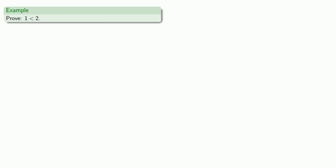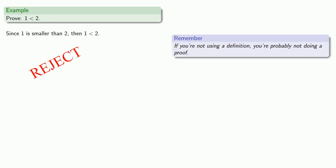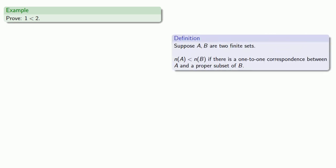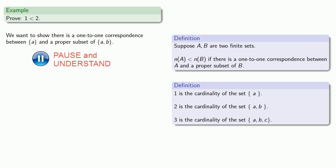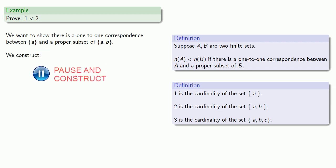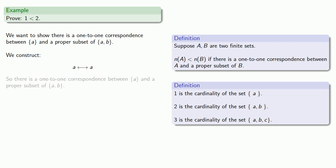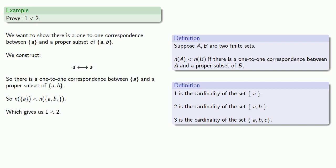Let's try to prove that one is less than two. Again, we might think: sure, that's easy — since one is smaller than two, then one is less than two. But again, if you're not using a definition, you're probably not doing a proof. For less than, we have to show there's a one-to-one correspondence between A and a proper subset of B. Since we want to show that one is less than two, we want to show there's a one-to-one correspondence between the set with cardinality one and a proper subset of the set with cardinality two. Then the cardinalities have the less-than relationship, which gives us one less than two.